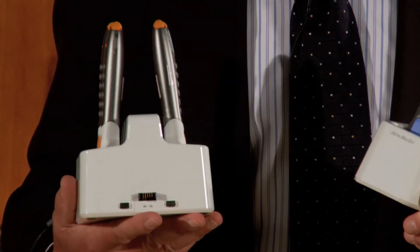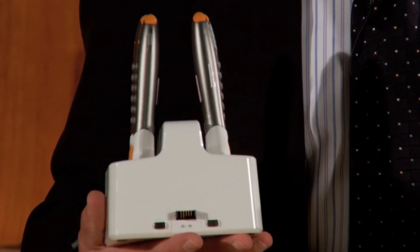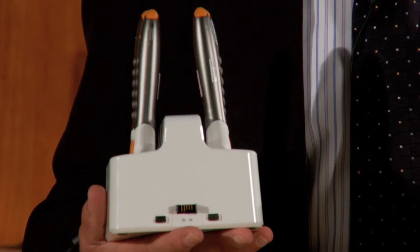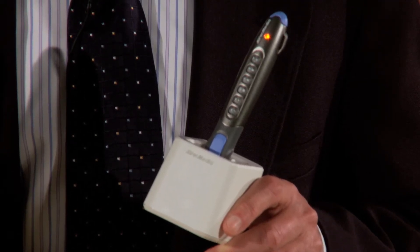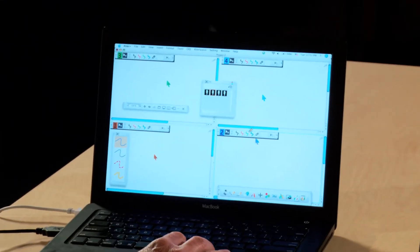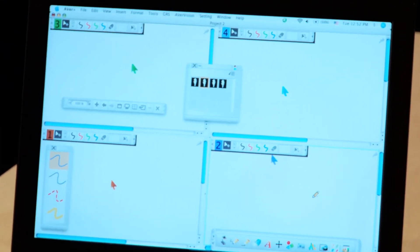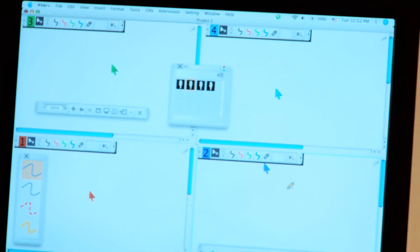Here's the deal: on a regular clicker you get buttons and maybe a small screen for limited text. The great thing about the AverPen is it doesn't have a screen. You actually use the screen in front of the class so it lets the students react with what's going on in the classroom.